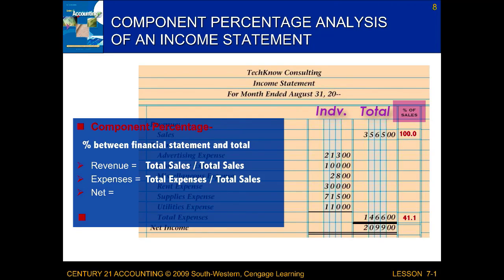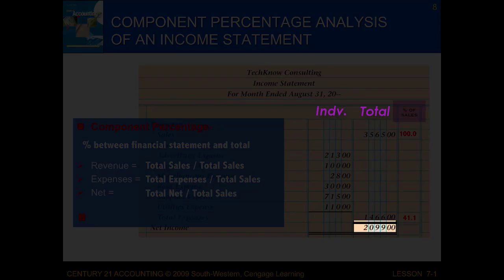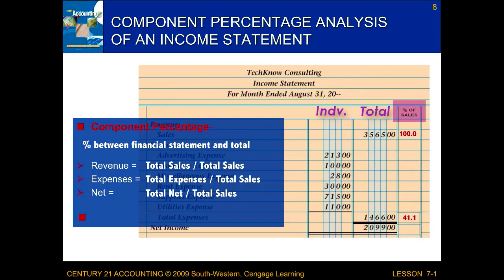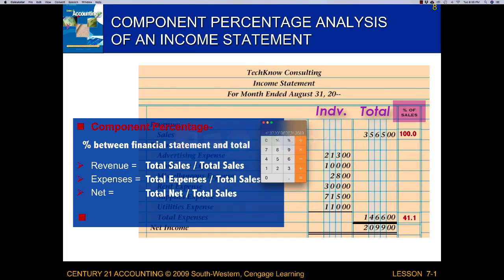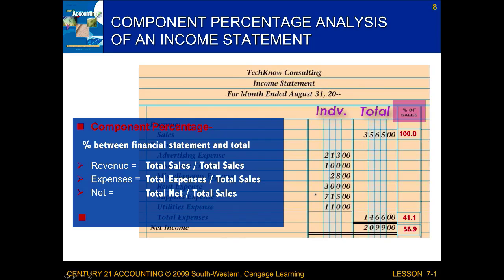When I look at my net income or net loss, I take that total in the net column and divide it by the percentage of sales. On my calculator, I take the total net, which is 2,099, and divide it by total sales, 3,565. I get a decimal that I need to convert to a percentage by multiplying by 100. I get 58.87, and since I need to round — I have an 8 and a 7 — I round up to 58.9.